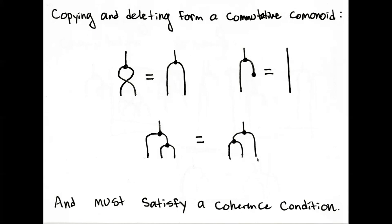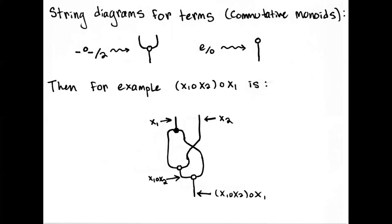Copying is also associative, with some coherence conditions. That's a good way to think about categories with finite products. Using these string diagrams for cartesian monoidal categories, we can represent terms in our algebraic theories: the times operation is drawn as a node with two inputs and one output, and the unit as a node with no inputs and one output.